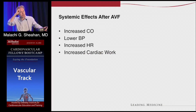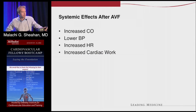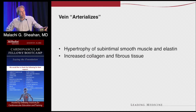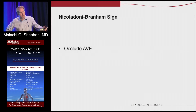After you put in a fistula, the patient has several systemic effects: increased cardiac output, lower blood pressure, increased heart rate, and increased cardiac work. These usually don't become too clinically apparent, but they can in larger volume fistulas. We say the vein arterializes — meaning smooth muscle cells increase elastin and collagen and fibrous tissue, so the vein wall essentially thickens, which is what we want. When you occlude the fistula, the normal physiologic response — the Branham sign — is that blood pressure goes up and heart rate goes down.